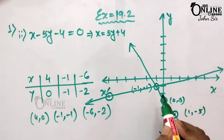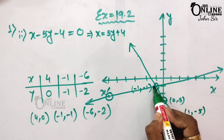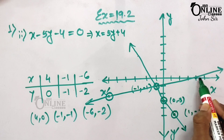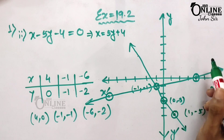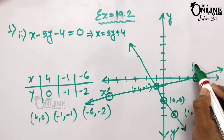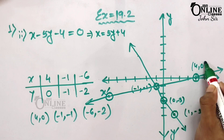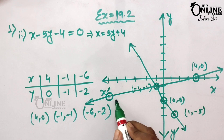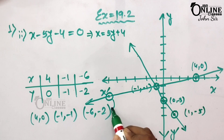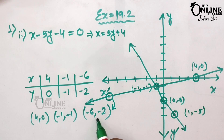Plot those three points and join them. Write down the coordinates: (4, 0), (-1, -1), and (-6, -2). This line is the graph for the second equation.